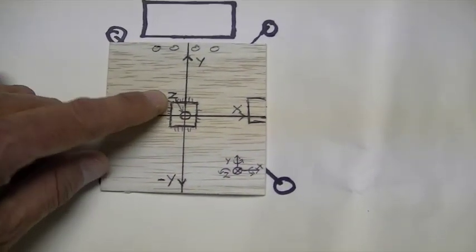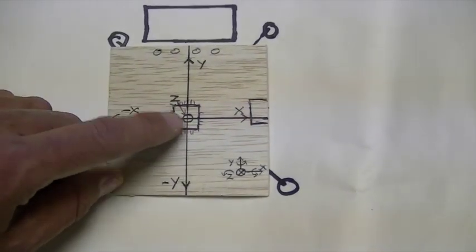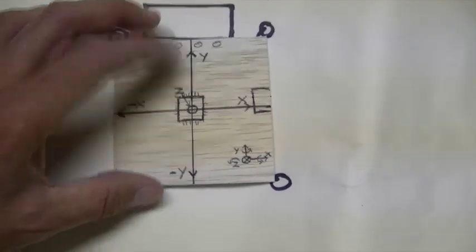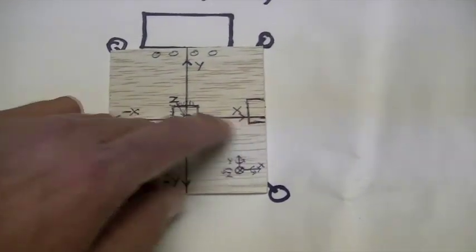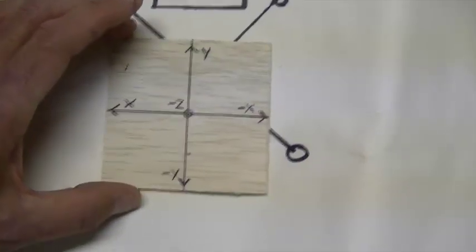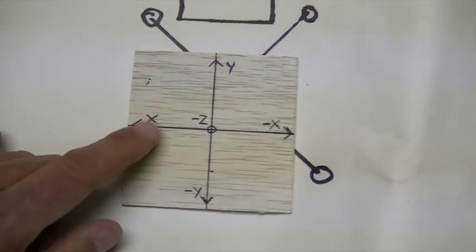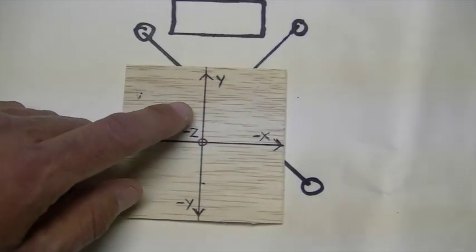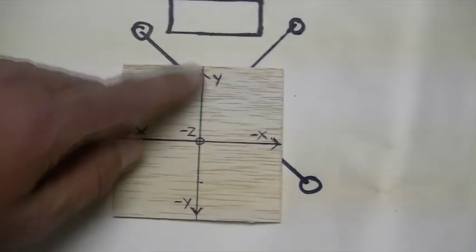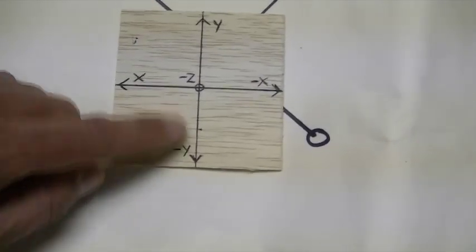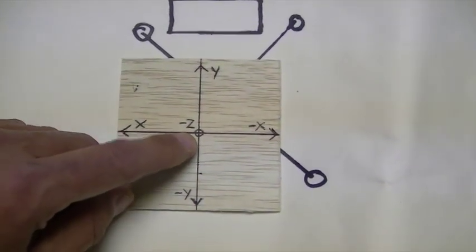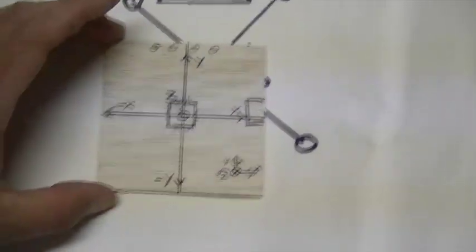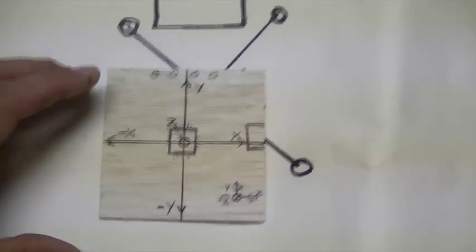Now, if I flip it over, remember X is pointing this way. You can see now X is still this way. Positive X is still this way. Since we rotated on the Y axis, Y is still this way. Minus Y is still this way. And minus Z is facing this way, on the bottom side of the board. So this is the way it's always on the board, no matter what.